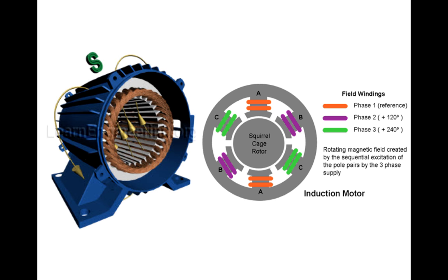The first thing we need to understand is how the magnetic field inside the induction machine is created. In the conductor ladder example, we were simply moving a permanent magnet across the conductor bars. But that's not how the magnetic field is created inside an induction machine. Inside the stator, the magnetic field is created based on Ampere's law. In the last video we talked about a solenoid, which is simply a conductor coil wound into a tightly packed helix. The magnetic intensity created by such a coil is proportional to the number of turns and the electric current flowing through it.